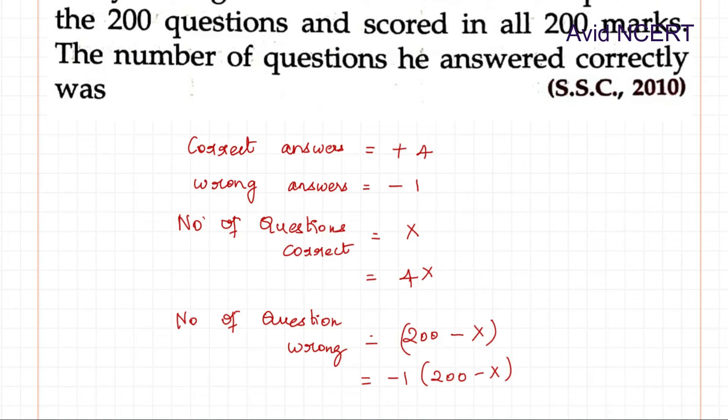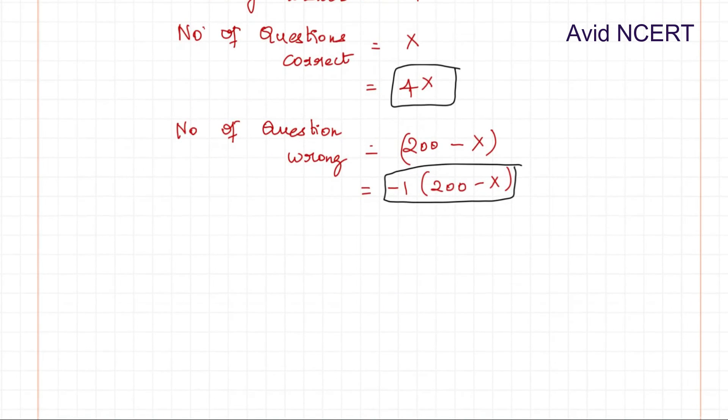By adding these two, we can find the number of questions he answered correctly. Which is equals 4X minus 1 into 200 minus X equals the mark he got, which is 200 marks.